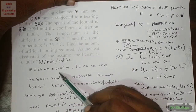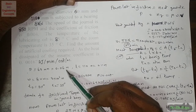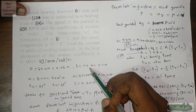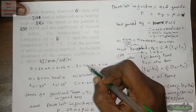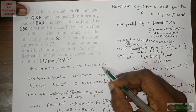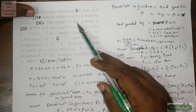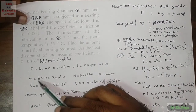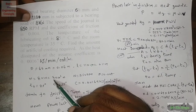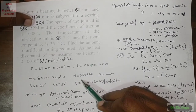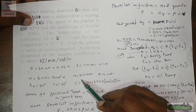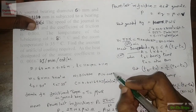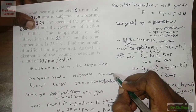Given data: diameter of the bearing is 60 mm, that is 0.06 meters. Length of the bearing is 110 mm, that is 0.11 meters. The load on the journal bearing is 8 kilo newtons, that is 8 × 10³ newtons. Speed N is equal to 850 rpm and coefficient of friction μ is 0.004.